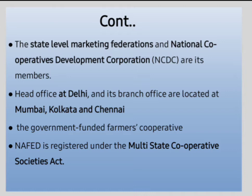The members of NAFED are state-level cooperative marketing institutions and national-level cooperative development corporations. In every state there are state-level cooperative marketing federations specific to commodities — for example, for rubber there is a Rubber Fed, for coir there is a Coir Board. So the members of NAFED are the state-level marketing federations and the National Cooperative Development Corporation, that is NCDC.